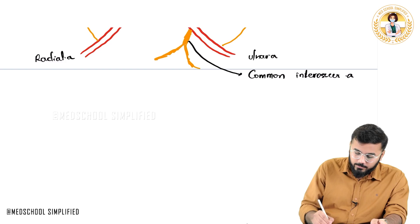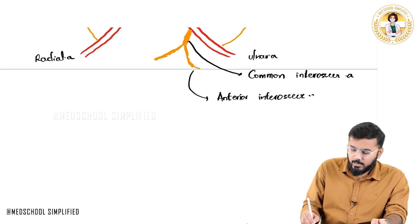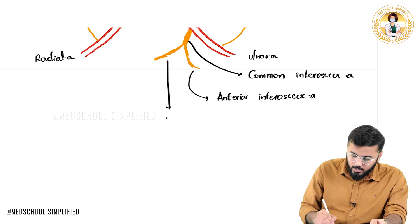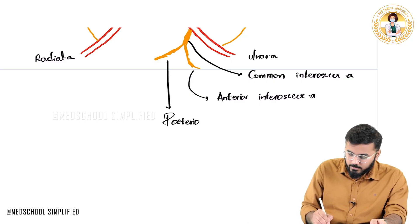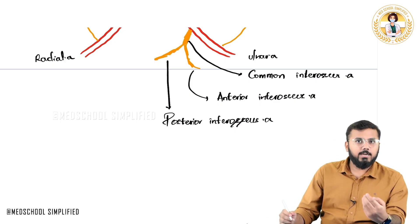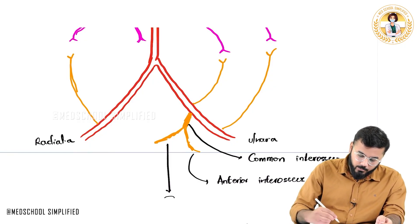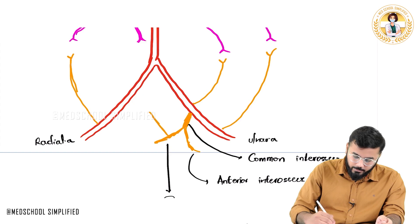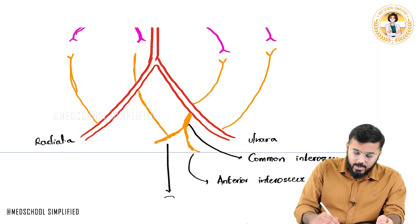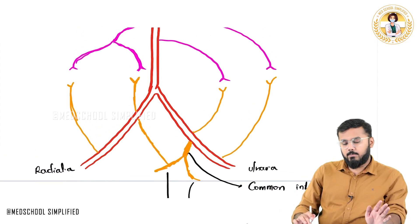One branch of the common interosseous artery is called the anterior interosseous artery, and the other branch is called the posterior interosseous artery. From the posterior interosseous artery, a branch travels upward and anastomoses with the second branch of the deep brachial artery.